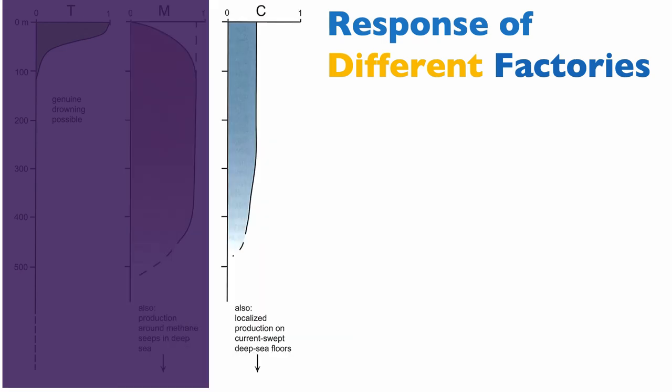The C-factory, just like the M-factory, is not limited by light penetration. Remember, C organisms control precipitation and so they require nutrients, they do not require light. We tend to have a relatively monotonous production of C-factory organisms throughout the water column.